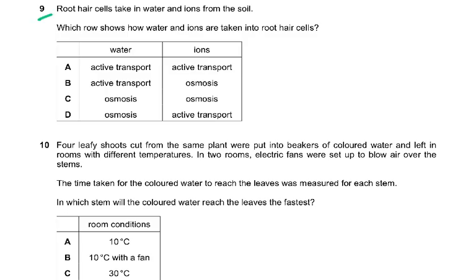Question 9 is straightforward: root hair cells take up water and ions from the soil. Water is taken in by osmosis and ions are taken in by active transport. The answer to question 9 is D.